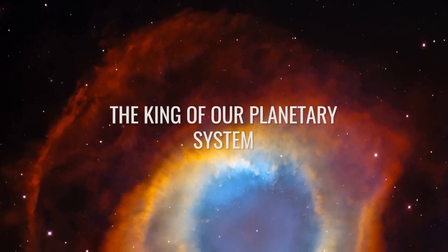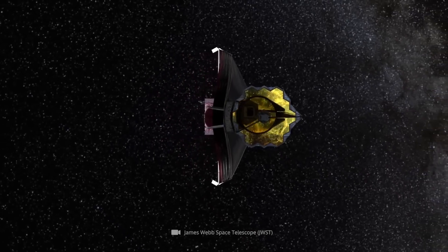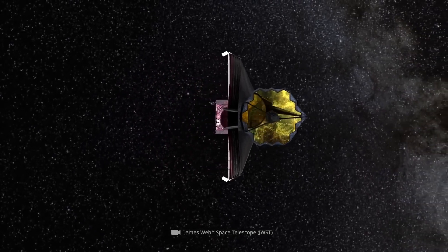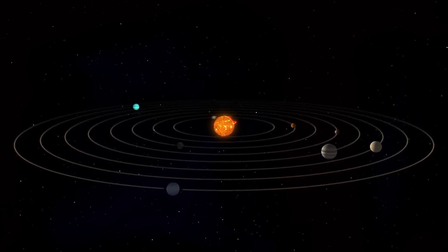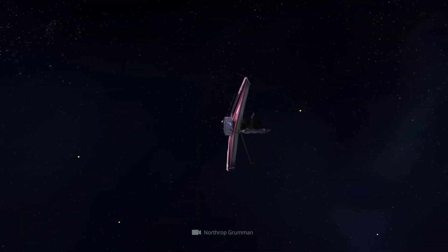The king of our planetary system. While Webb is best known for tracking down the most remote and thus oldest structures in the observable universe, we should not forget that from time to time it also takes a look at our immediate planetary neighborhoods.